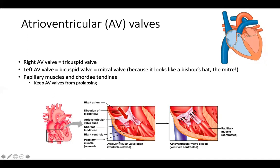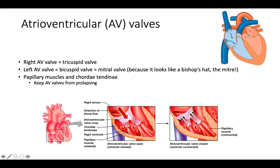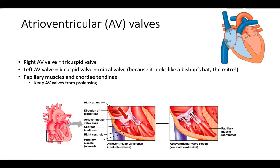In the relaxed ventricle, the valve is open and the cords pull down to open that valve. When the ventricle and papillary muscle contract, the chordae tendineae pull up and anchor the valve to keep it tight, preventing the leaflets from going back into the atria under the force of the contracting ventricle.